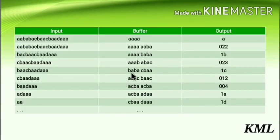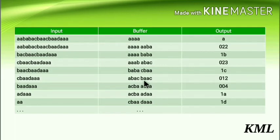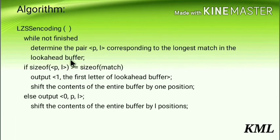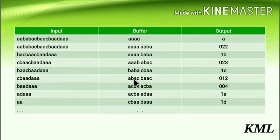Shift the buffer by one position — A goes out, ABAC comes to the left, BA remains, and next input letter C fills the empty space. Start matching: you have BA in the look-ahead and BA in the dictionary — a match of two characters. Multiply 2 by 3 to get size of match = 6. Check: 4 >= 6? False. Go to else — output 0, position 1, length 2.